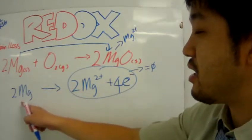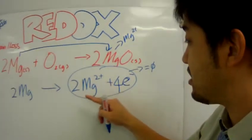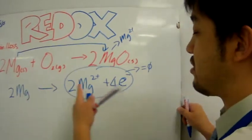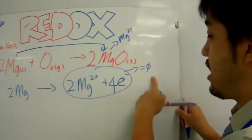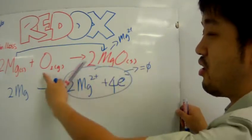And the charge of this elemental magnesium is zero. So, now this charge is balanced out. And what we've noticed is that magnesium here, elemental magnesium here, lost two electrons, four electrons. Two magnesium elements lost four electrons.